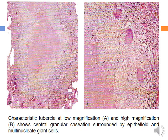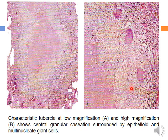This photograph shows a granuloma. Centrally there is an eosinophilic homogeneous structureless material representing caseous necrosis. Around it is a rim of epithelioid macrophages and scattered Langhans giant cells. This is followed by another rim of activated T cells. In the high-power view, we see the caseous necrosis area, epithelioid macrophage area, Langhans giant cells, and the surrounding lymphocytes and fibroblasts.